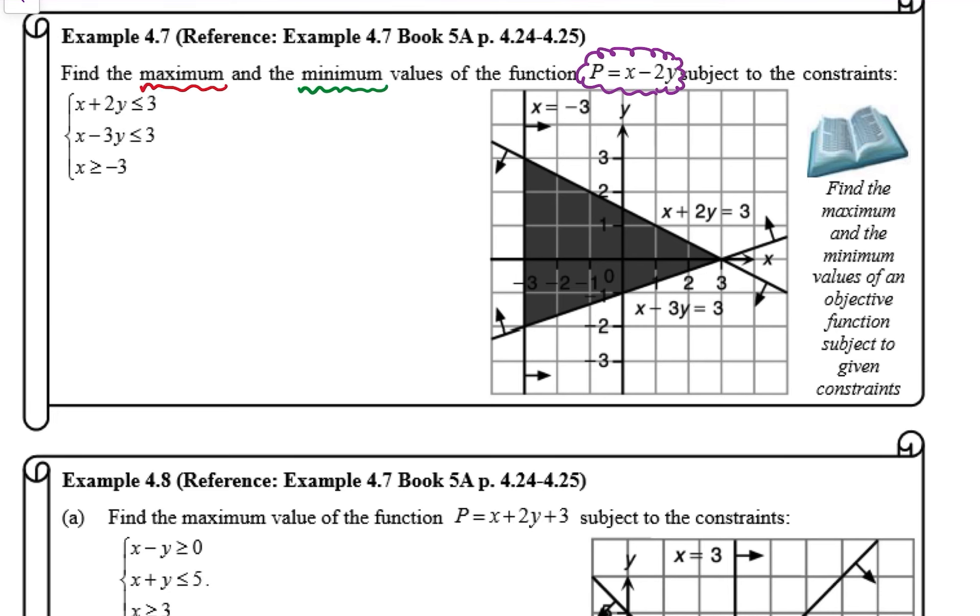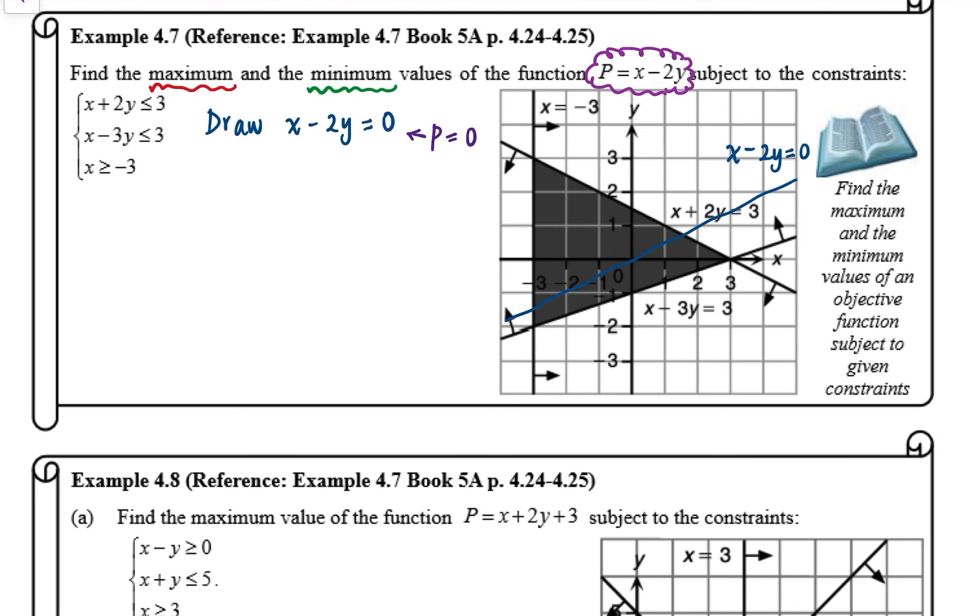First, we will draw x - 2y = 0. So note that we let P = 0 at the beginning. Since the coefficient of x is positive,